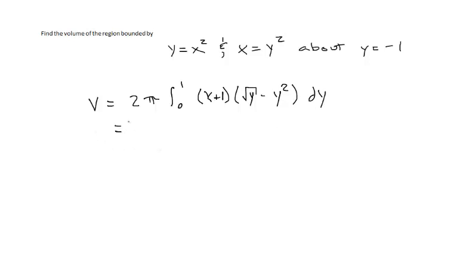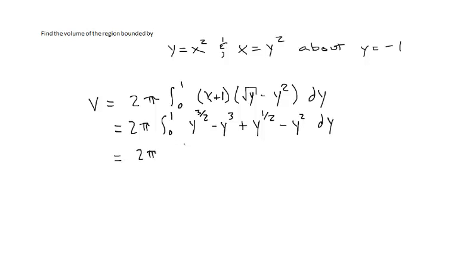Simplifying, we have 2π times the integral from 0 to 1 of: y times the square root of y equals y to the 3/2, y times negative y squared equals minus y cubed, plus y to the 1/2 minus y squared, dy. Taking the integral: 2π times (y to the 5/2 divided by 5/2, which equals times 2/5, minus y to the fourth over 4, plus y to the 3/2 divided by 3/2, or times 2/3, minus y cubed over 3), evaluated from 0 to 1.